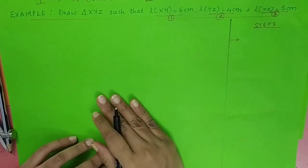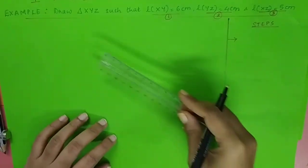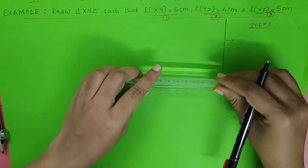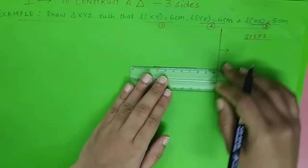For the actual construction, whenever we begin, we don't begin with a fair diagram. We first construct a rough figure. On the extreme right-hand side of your book, you will draw a rough triangle, a very small rough figure.